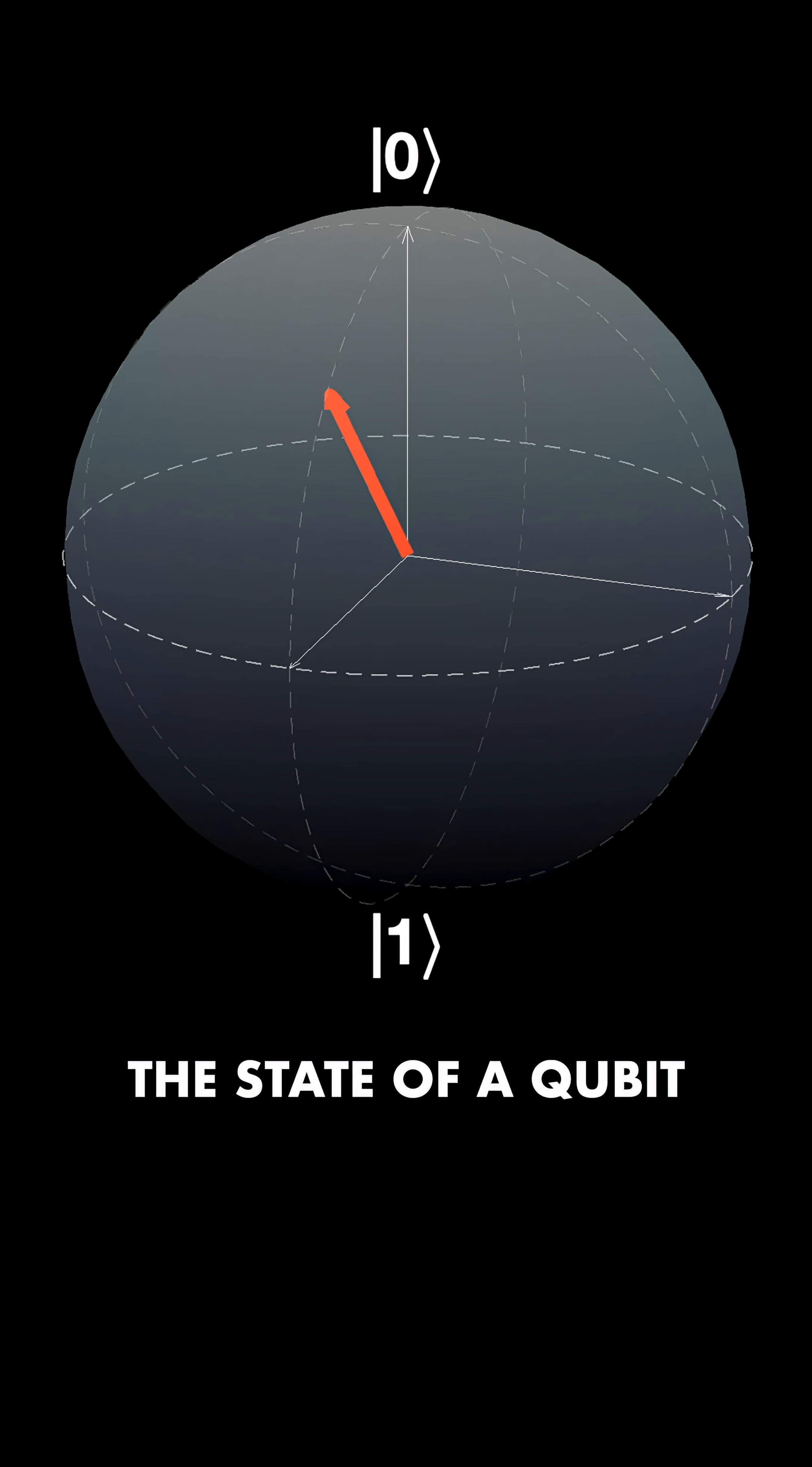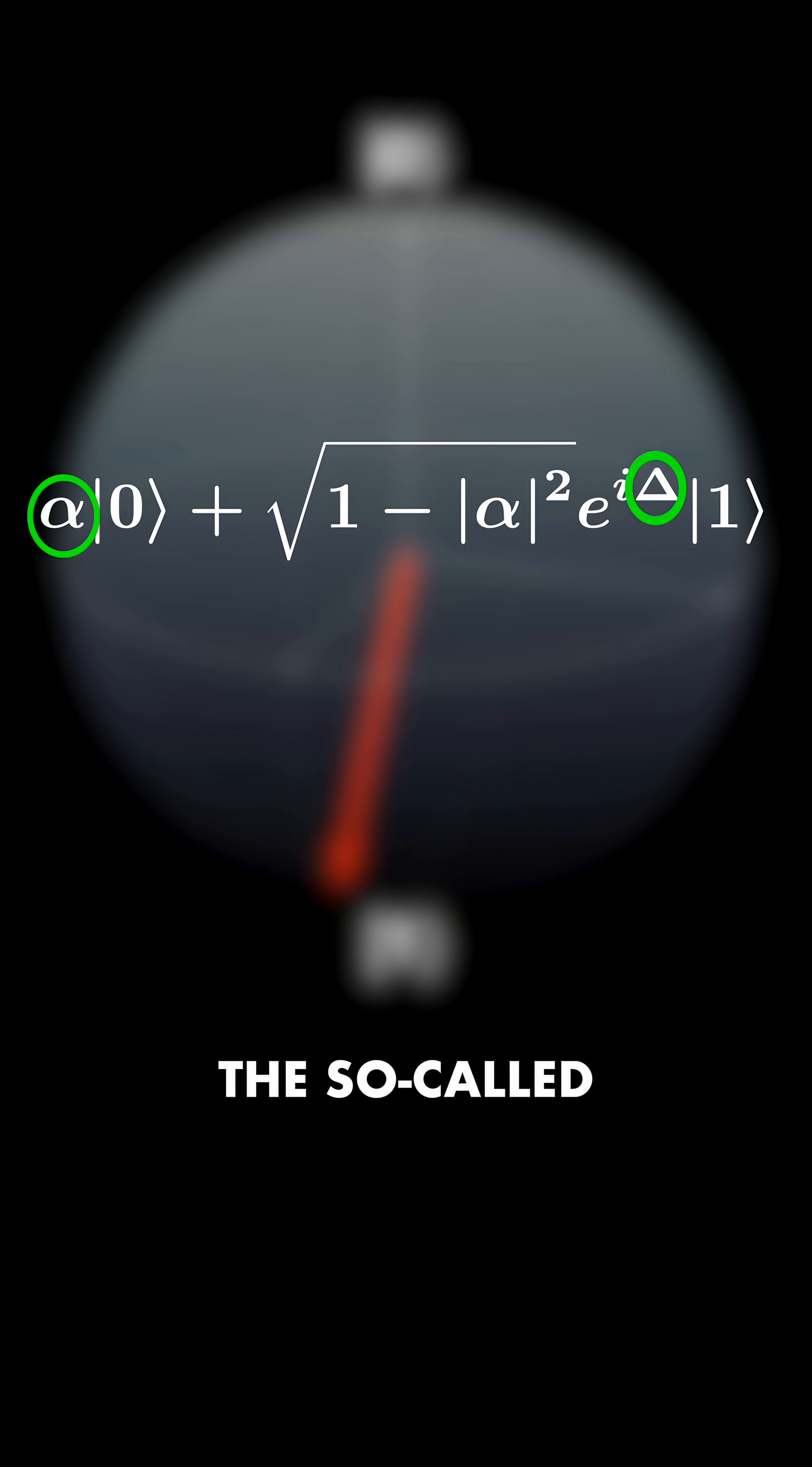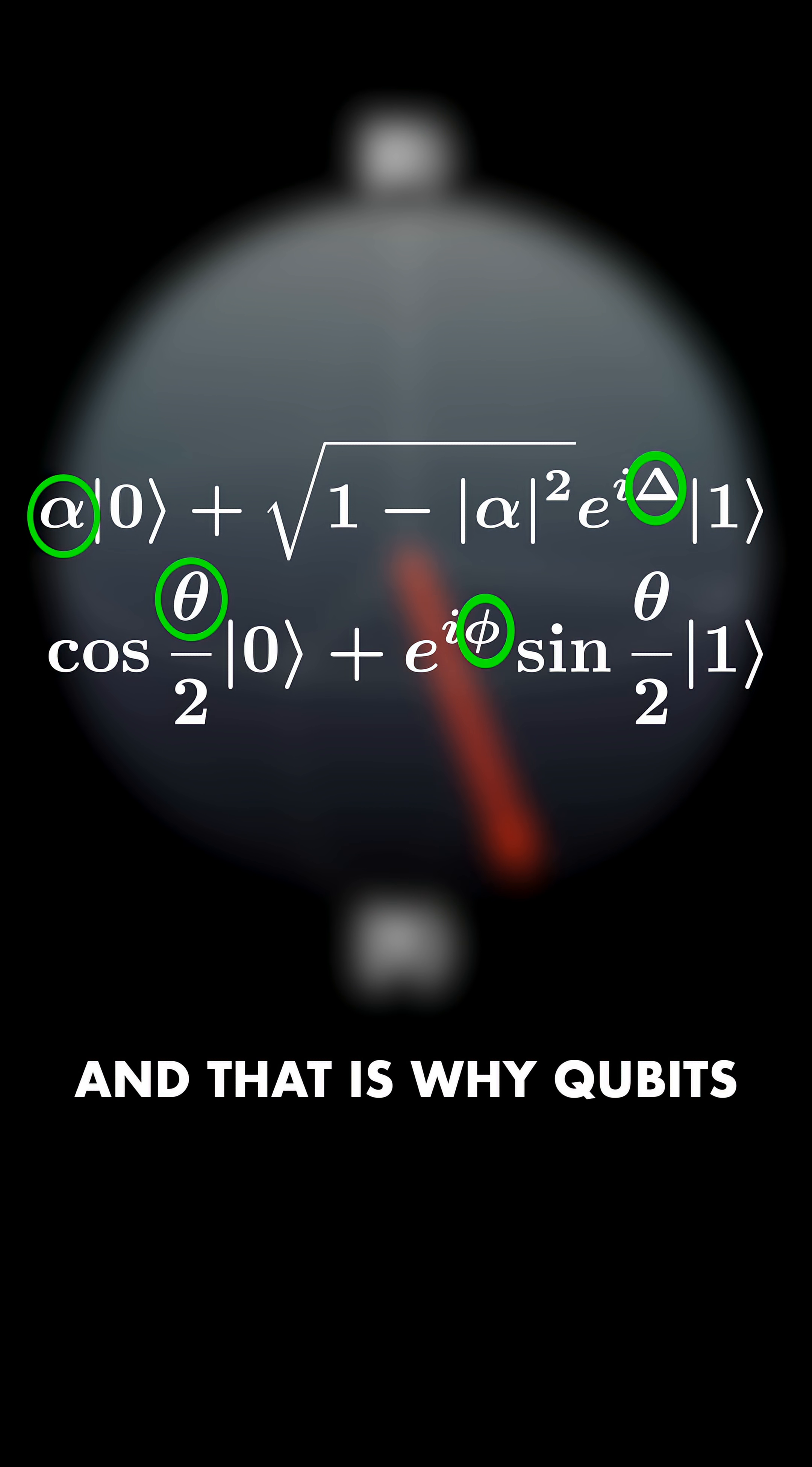The state of a qubit can be described as the surface of a sphere, the so-called Bloch sphere. And that is why qubits are 2D, not 4D.